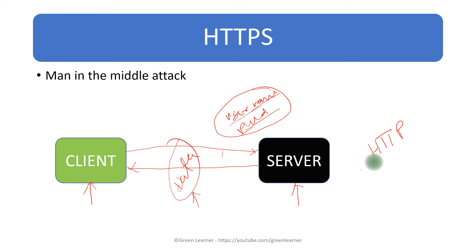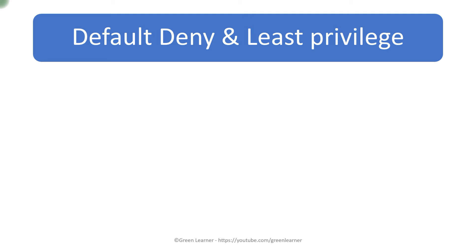HTTP is the hypertext transfer protocol on which clients access our application. We should run our application on a secure environment using TLS — transport layer security — by implementing HTTPS at the application level. Whatever data is transmitted is encrypted and no unauthorized person can see it other than the trusted client and server. All services must be deployed in HTTPS mode.